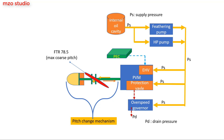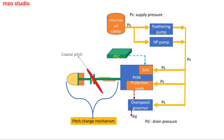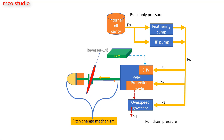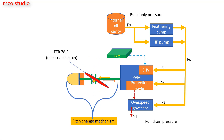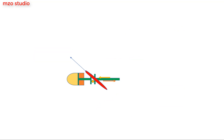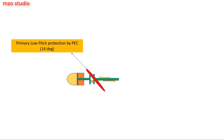The feathering pump and HP pump supply oil pressure to the PVM and overspeed governor. The PEC then controls the electro-hydro valve (EHV), which creates the increase or decrease pressure to the pitch change mechanism. Primary low pitch protection is provided by the PEC.